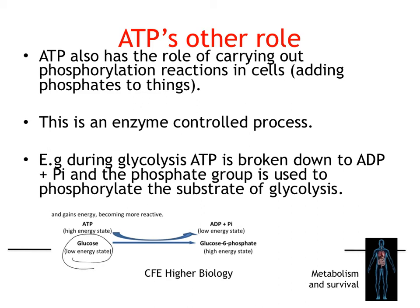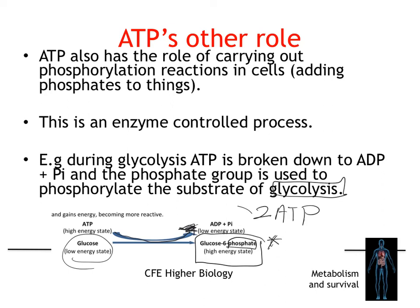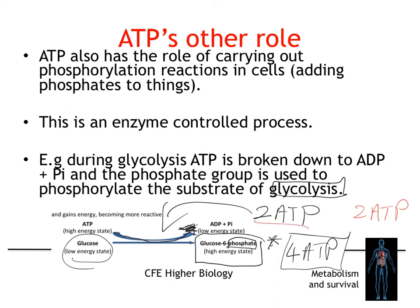Here we've got our glucose, and ATP is broken down to ADP and inorganic phosphate, which phosphorylates the glucose — it adds a phosphate group to the glucose. We talk about the first stage of respiration having an energy investment stage, and this is that energy investment stage. In actual fact, two ATP are used up in glycolysis — that's investing the energy — but in that process four ATP are formed, so overall we gain two ATP molecules from glycolysis.